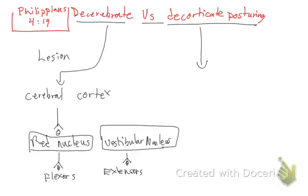The vestibular nucleus travels through a tract called the vestibulospinal tract. So we have the vestibulospinal tract connecting the vestibular nucleus to the extensors. That covers the decerebrate pathway.